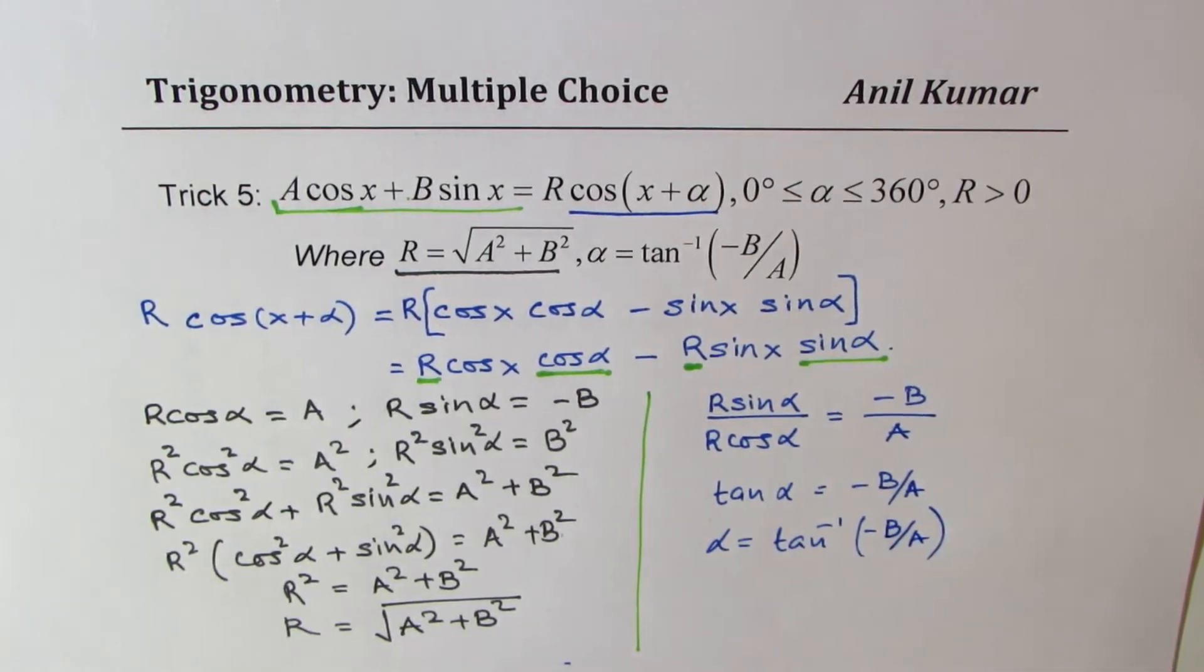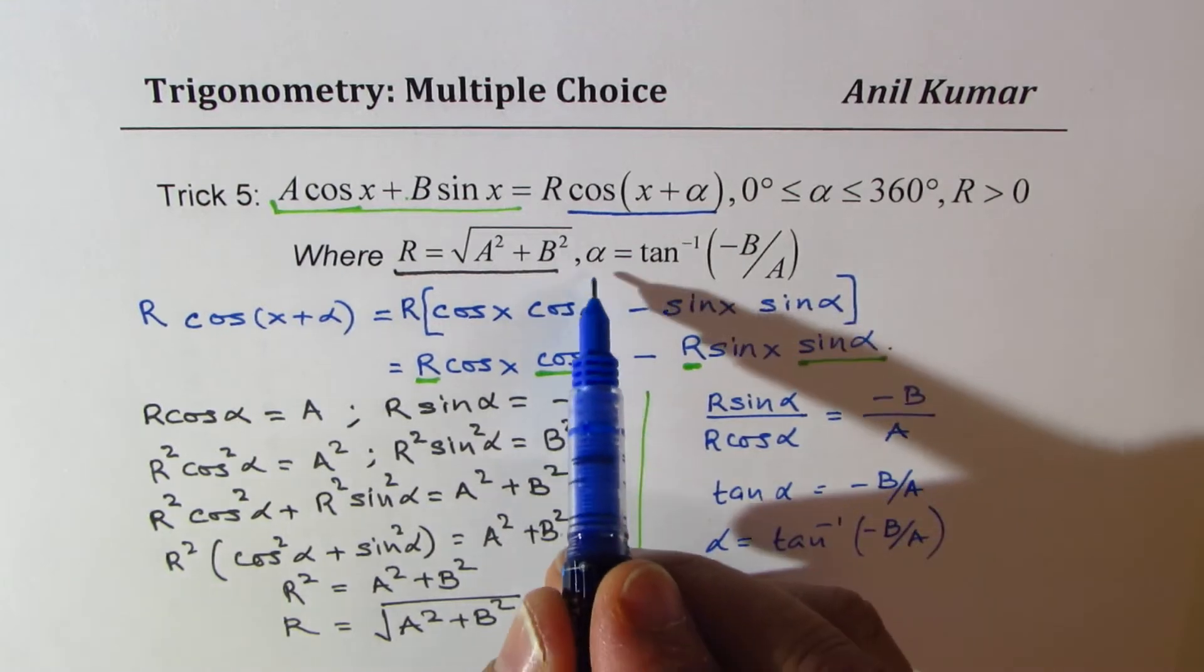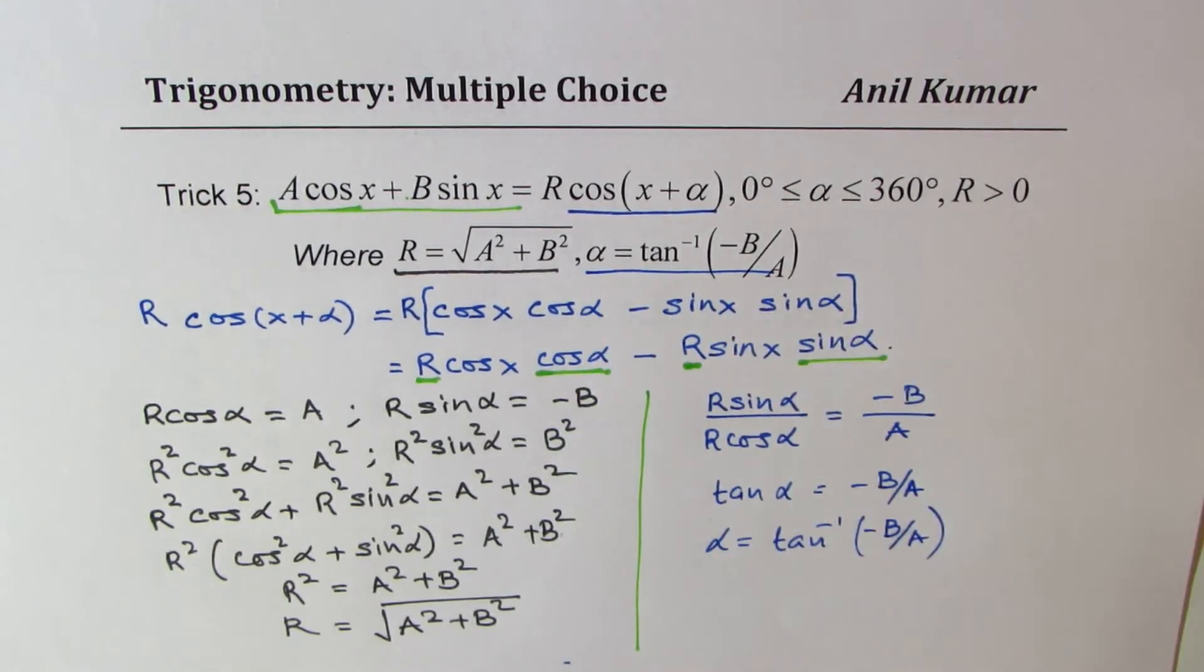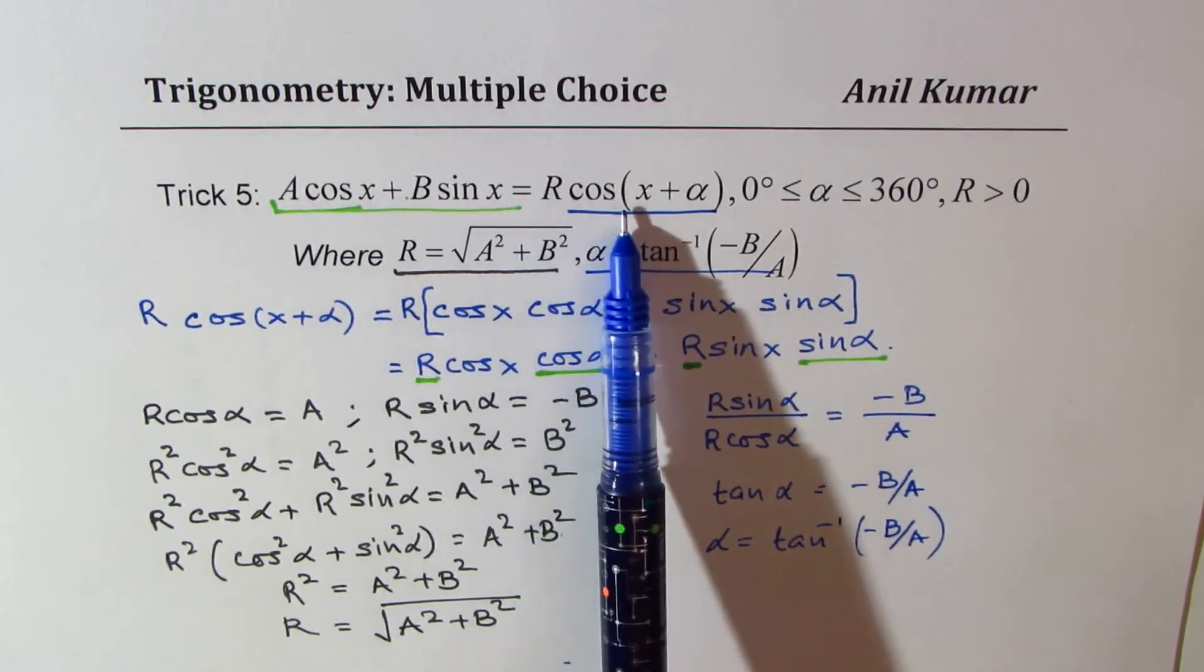Does it make sense? So that gives you the second part. That is how we could write this as a single expression, cos(x plus alpha).